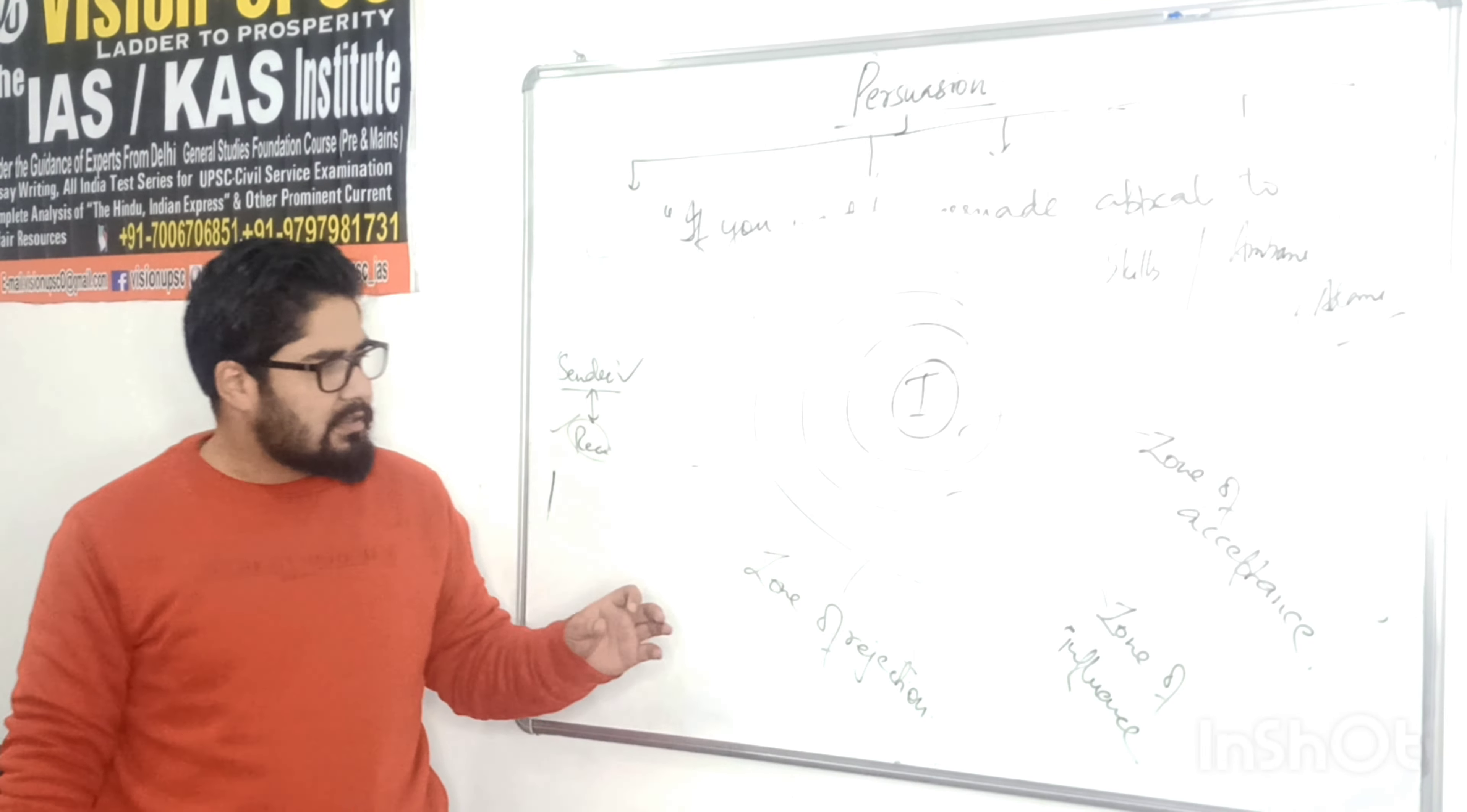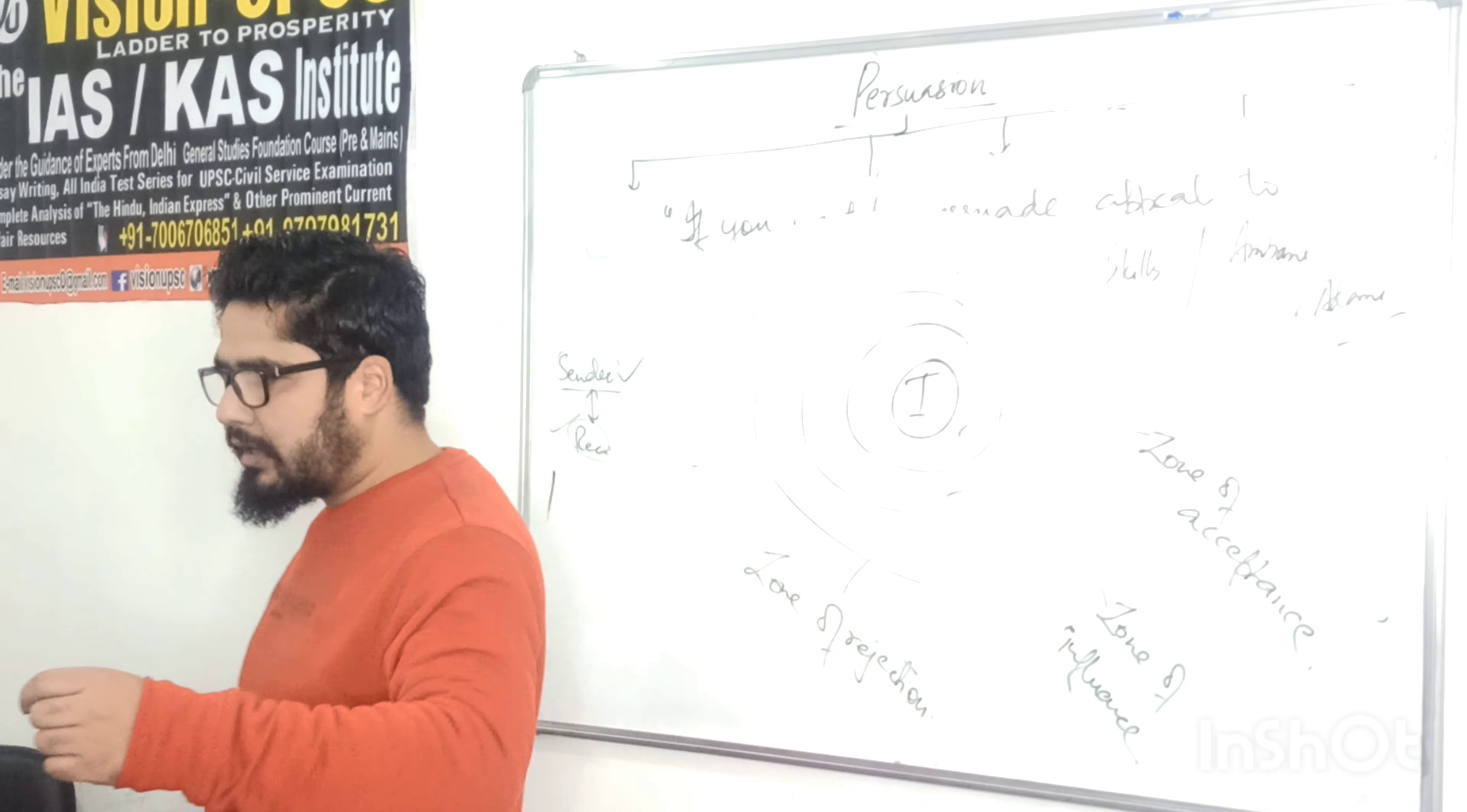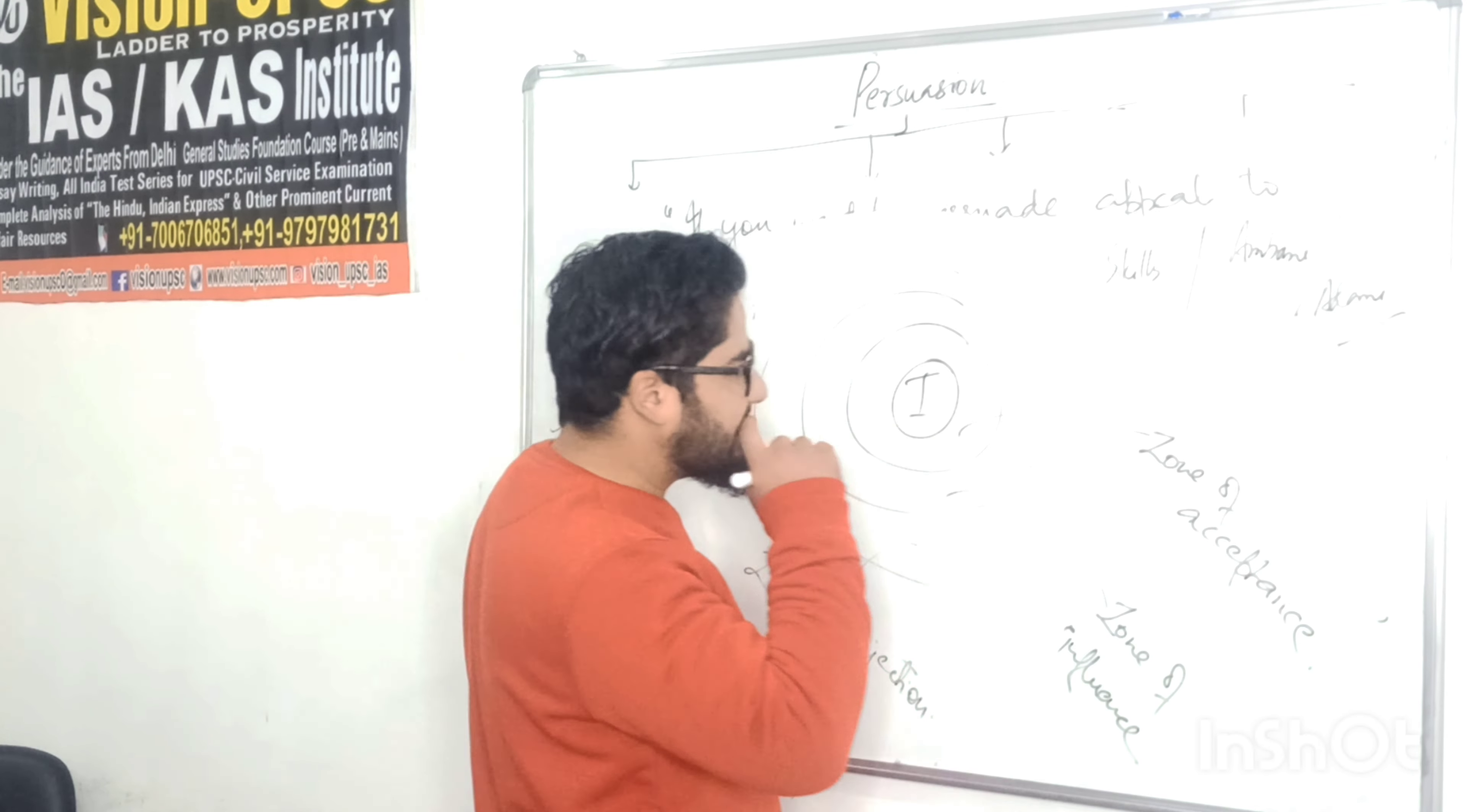Every individual has three zones: zone of acceptance, zone of influence, and zone of rejection. You have to first identify the people whose zone of acceptance is large.